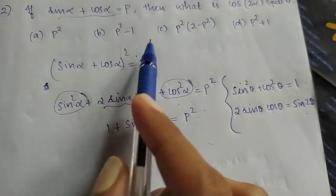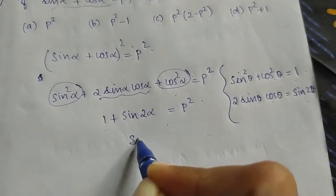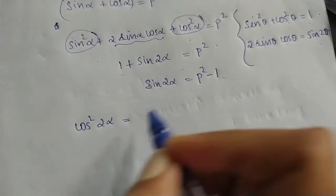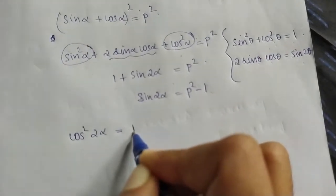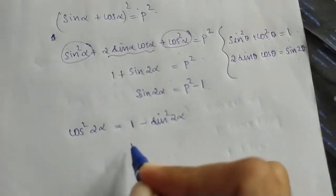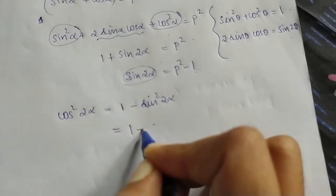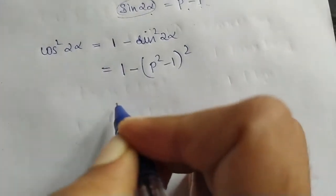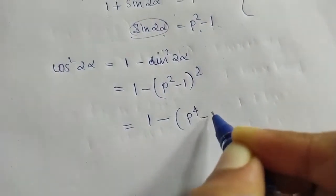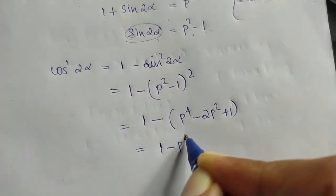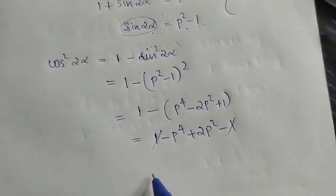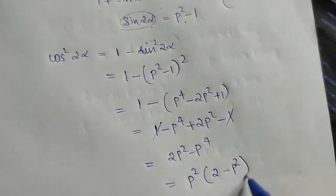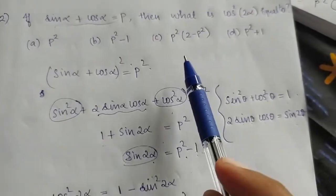Let's solve for cos 2 alpha. We know sin 2 alpha equals p² minus 1. And cos 2 alpha equals 1 minus 2 sin² alpha, which equals 1 minus (p² minus 1)². Expanding: 1 minus (p⁴ minus 2p² plus 1) equals 2p² minus p⁴. This simplifies to p²(2 minus p²), giving Option C as the right answer.